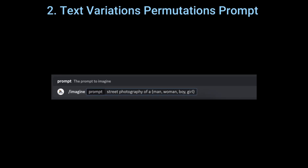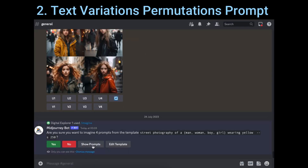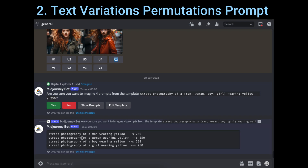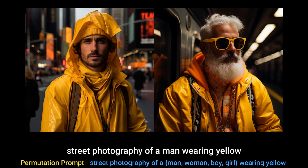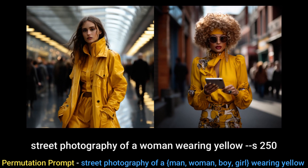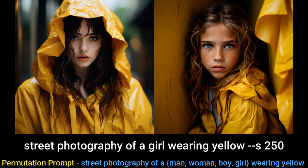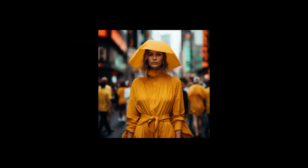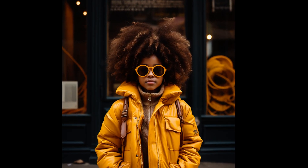We can take this prompt and play with it just a little bit by adding 'wearing yellow' to the base. Running this on mid journey and clicking 'show prompts' gives us the four prompts again. Now we have street photography of a man wearing yellow, a woman wearing yellow, and the same for the boy and girl. The base prompts are consistent across all images; only the subjects from the option list change.